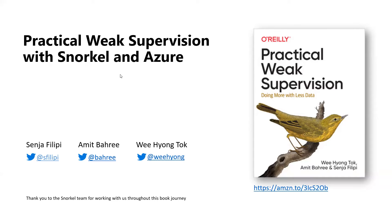As Bill mentioned, our newly released book is titled Practical Weak Supervision. The main tools that we use to demonstrate how we can practically do weak supervision are Snorkel, a data programming framework, and we were also able through Azure deployments and Azure offerings to generate the labels we need for weak supervision. We were grateful to the Snorkel team for working with us through our journey — they revised our book and gave us suggestions on how to improve and make it technically more accurate.